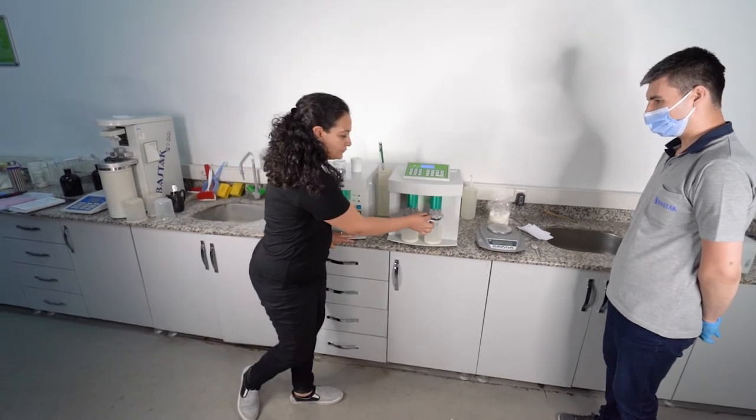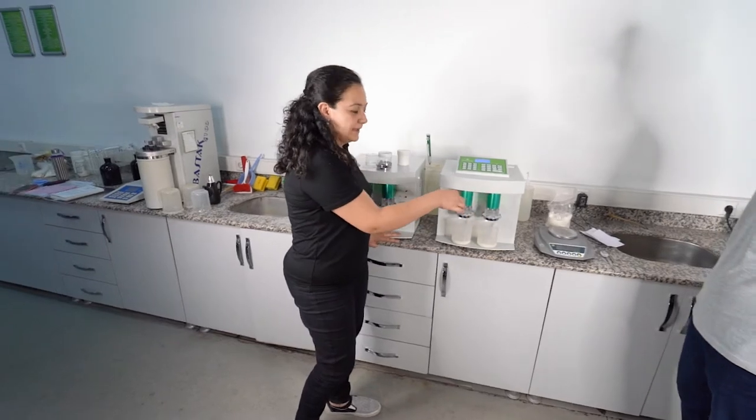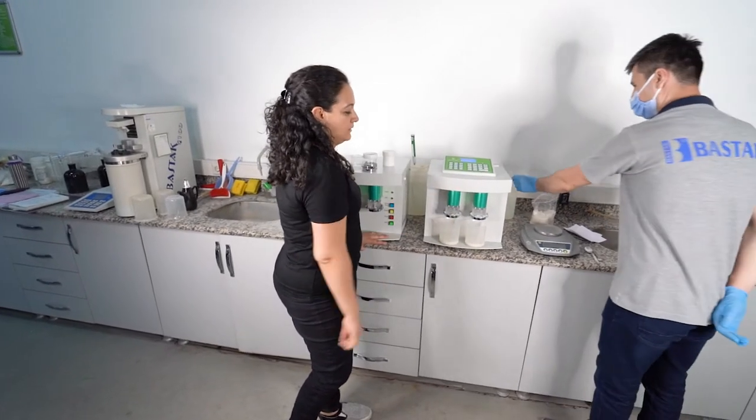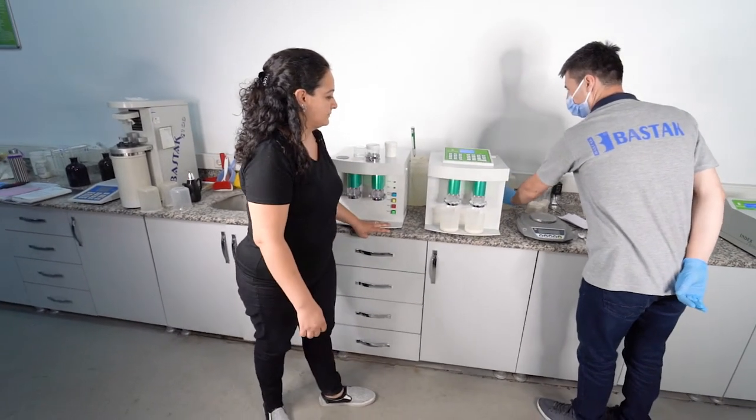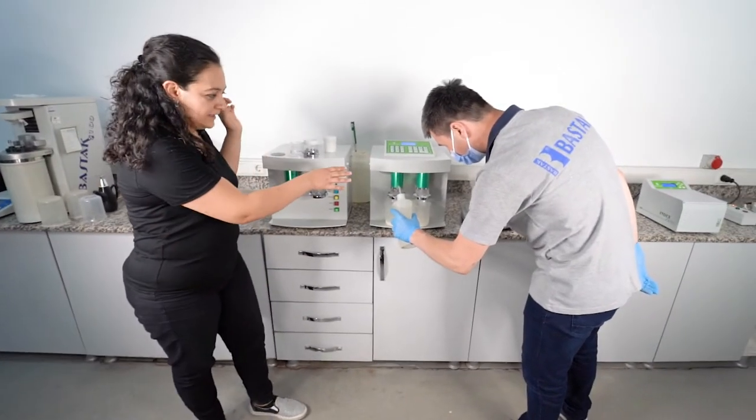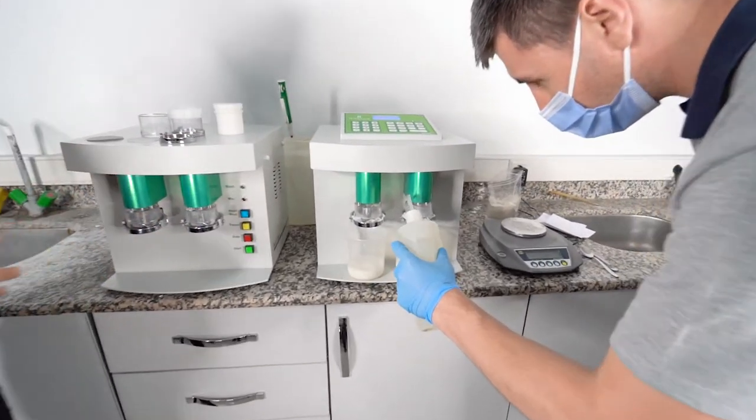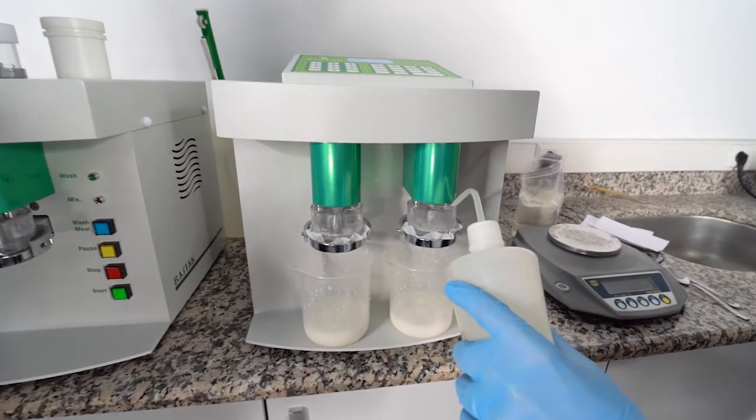If there are some flour particles here, you can add some water and you can remove them through the sample. You should do that step near to the end of the process. You shouldn't affect your result at the first time.